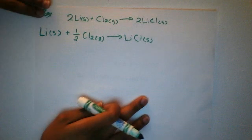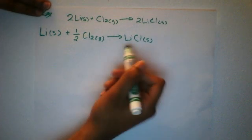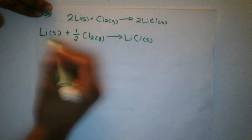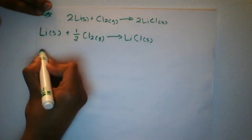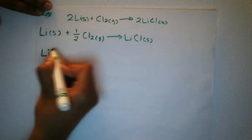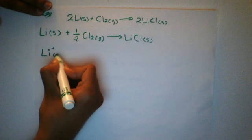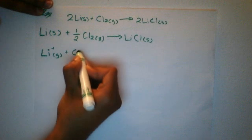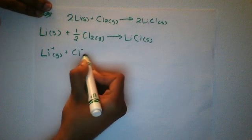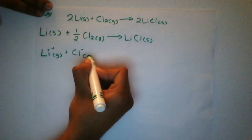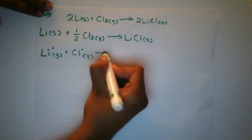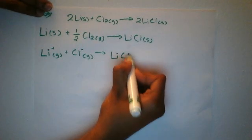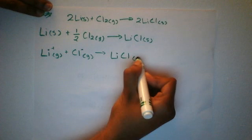The second formula we need is the formation of lithium chloride using ions: Li+ gas plus Cl- gas gives LiCl solid. This uses the lithium cation and the chlorine anion, both as gases, forming lithium chloride solid.